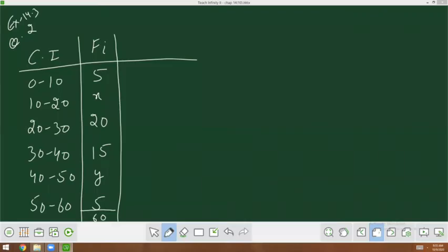I am going to solve question number 2. This is a question for the exam with 4 marks. Mostly this question comes in the exam. This is the type where we need to find out the x and y frequency. Median is given as 28.5. Clear?